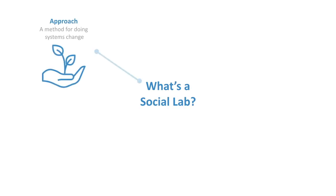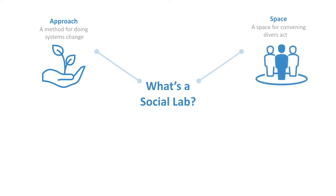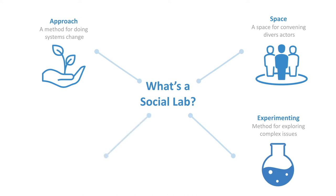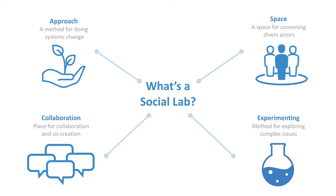The key aspects of a lab: it is an approach to doing systems change — not theoretical systems thinking, not ideas and models, but actually a practical thing where we try to do systems change. We try to bring people together and iterate through a process of them trying to solve the problem for themselves. It's also a space — a place for convening diverse actors — and a method for exploring complex issues. Collaboration is very much central to systems change, enabling the co-creation of solutions.